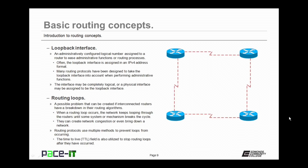The loopback interface is an administratively configured logical number assigned to a router to ease administrative functions or routing processes. Often the loopback interface is assigned in an IPv4 address format, even when IPv4 isn't used on the router. Many routing protocols have been designed to take the loopback interface into account when performing administrative functions. The loopback interface may be completely logical, or a physical interface may be assigned to be the loopback interface.